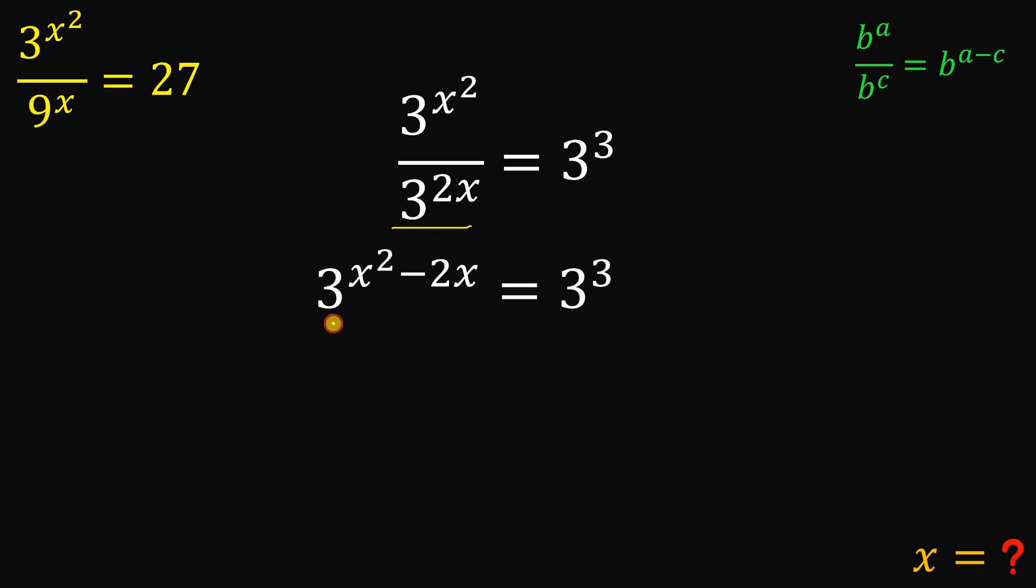Now, from here, we have the same base and we have equal expression. Therefore, we can say that their exponent must be equal, so x squared minus 2x equals 3. Now, equate this to 0. We have here a quadratic equation x squared minus 2x minus 3.